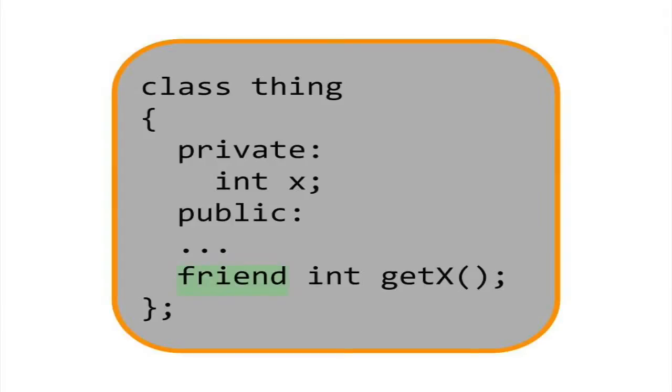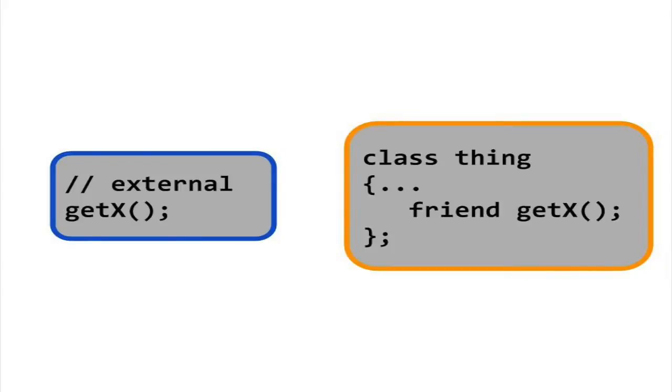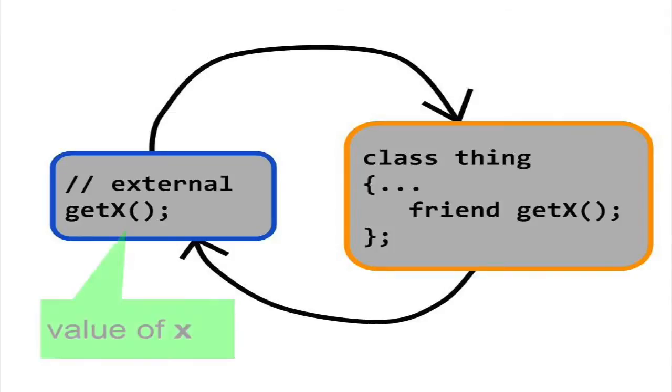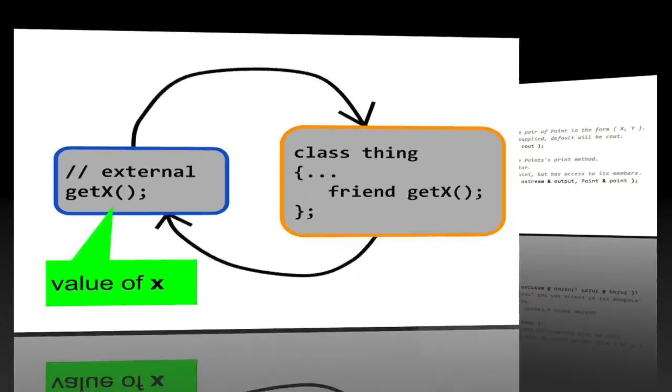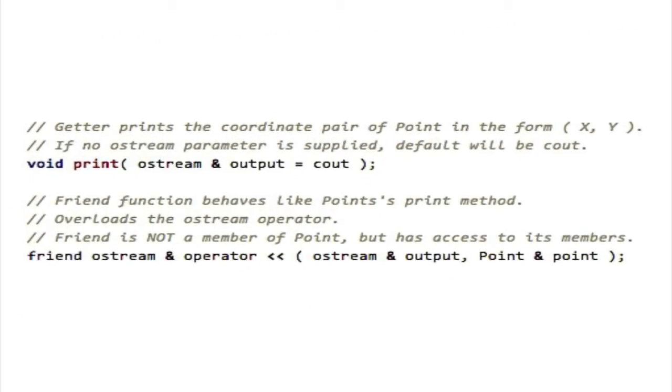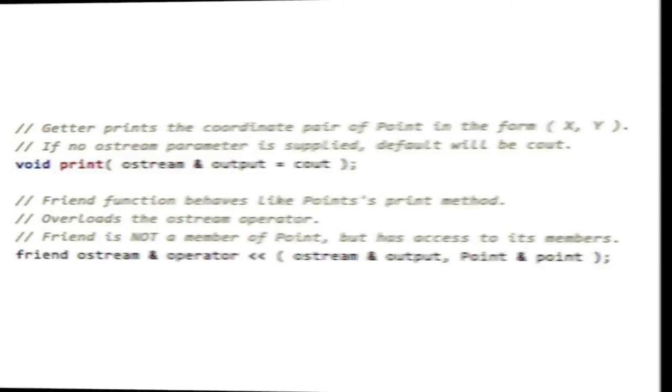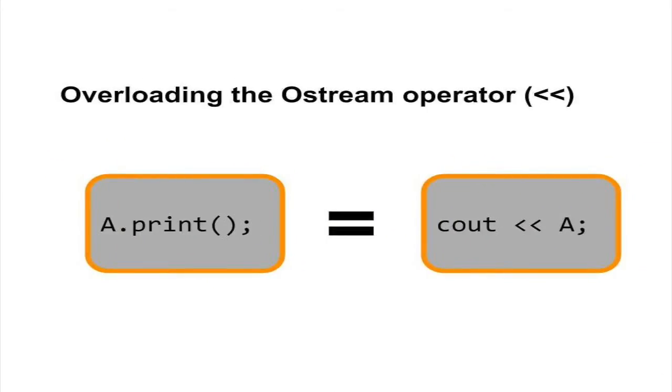Sometimes, a friend function is included in the method declarations of a class. The friend function is not a true member of the class. Instead, it is the signature of a function that is external to the class. The keyword friend lets the function have access to the private data members of the class. Friend functions are commonly used for overwriting the iostream operators so that you can print the contents of an object using the double angle brackets, rather than a local print method.